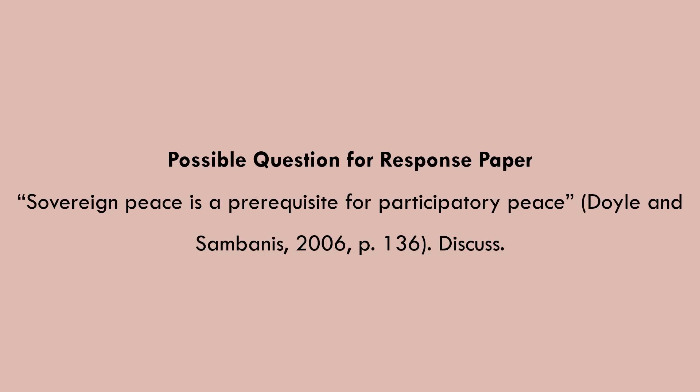Finally, before we finish, a possible question for your response paper: I want you to discuss the point from Doyle and Sambanis that sovereign peace is a prerequisite for participatory peace — negative peace or sovereign peace is a prerequisite for positive or participatory peace. Do you agree or disagree? Can you cite some examples of UN peacebuilding missions to support your answer? Think about whether negative peace must precede positive peace, and whether negative peace is achievable. Make sure you think about this and I would strongly encourage you to write on this for your response paper. That was it for today — we'll meet on Wednesday.